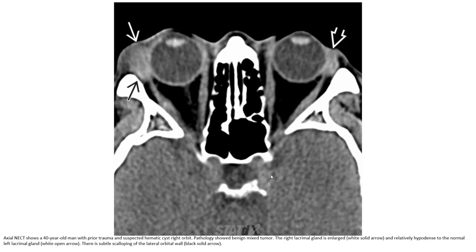Let's see the first example. This is an axial non-enhanced CT of a 40-year-old man with proptosis and suspected dermoid cyst.